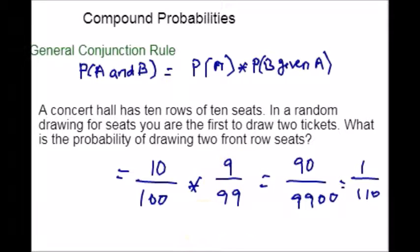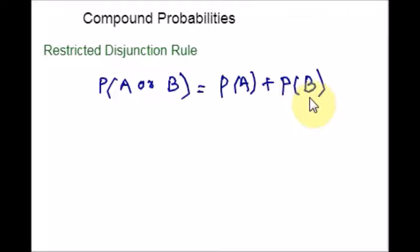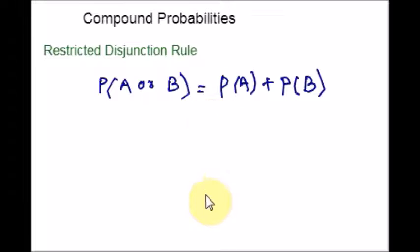Here is the rule for disjunction: probability of A or B equals probability of A plus probability of B. If the events A and B are mutually exclusive, you can apply this rule. Let me show some examples so you will understand this.